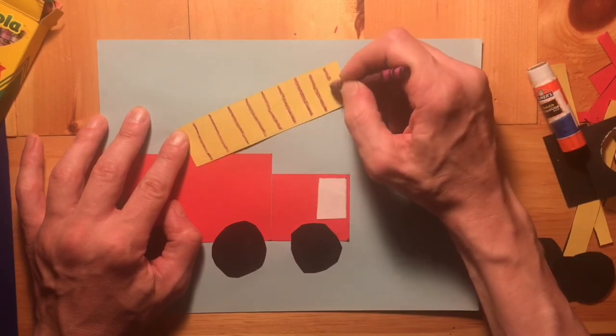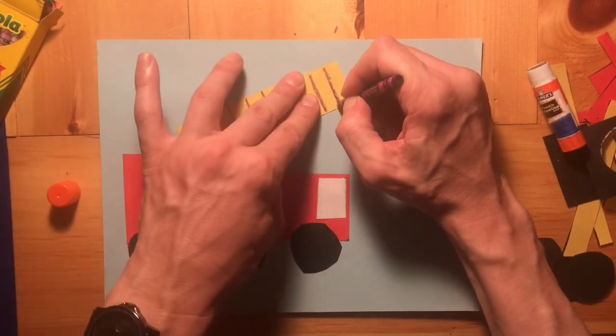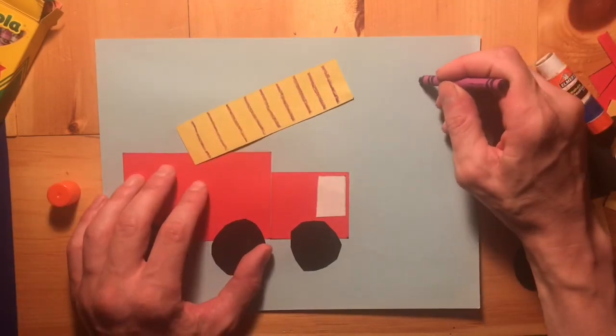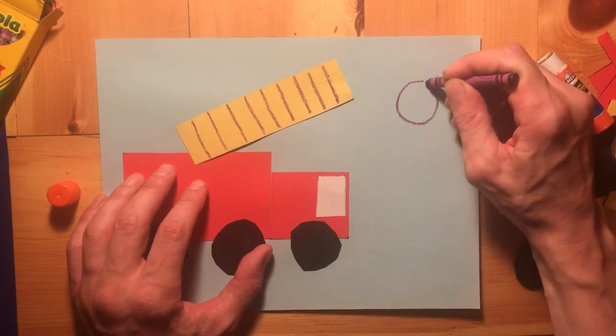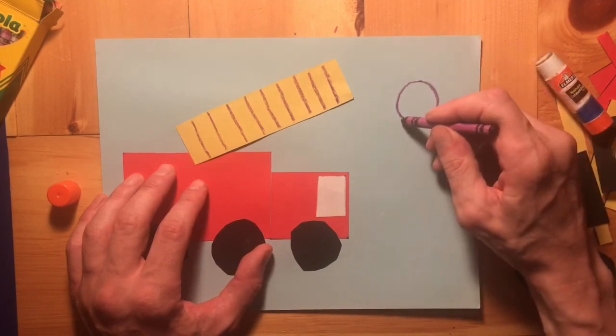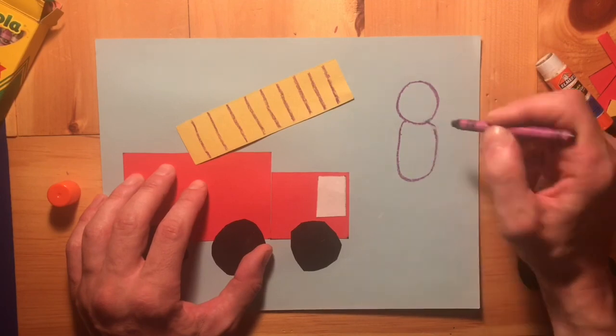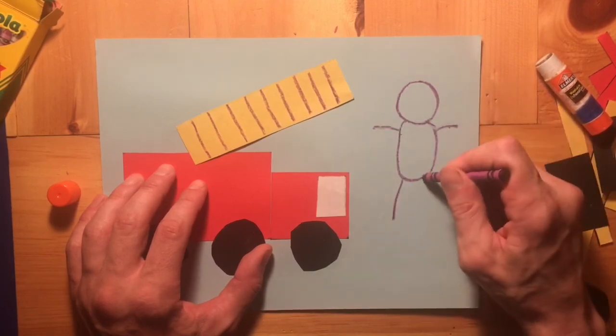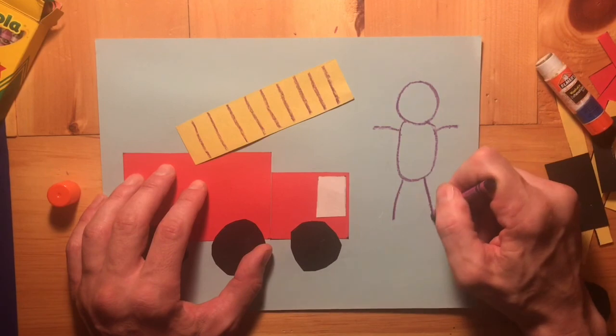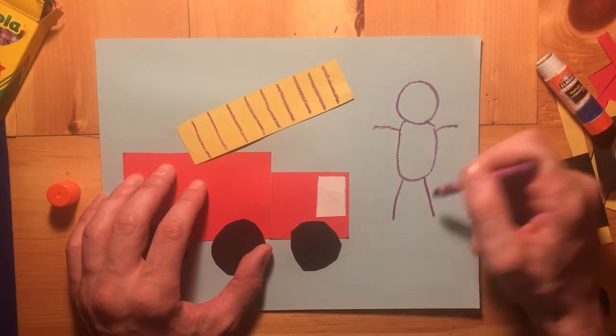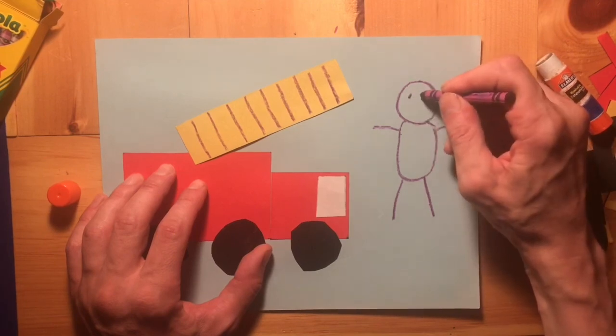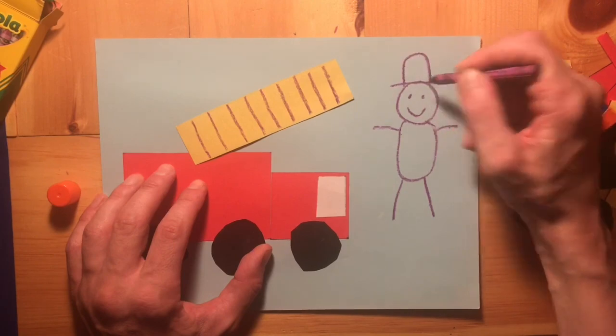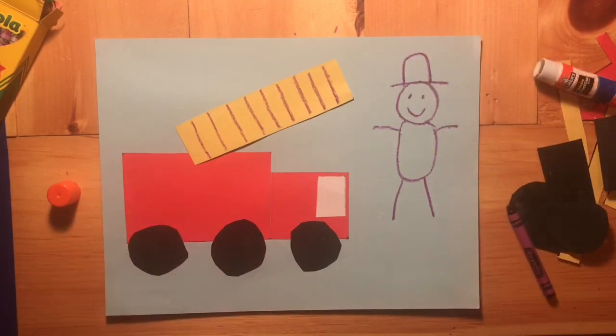Now let's draw a picture of you as a firefighter standing next to this nice shiny truck. So first thing we're going to do is draw a head. Don't forget he needs a body and then his arms are going to come off the top and his legs are going to come off the bottom. Make sure that his arms are touching his body and then we're going to add two eyes, a mouth, and of course a nice big firefighter helmet on top of his head. Nice job making the fire truck.